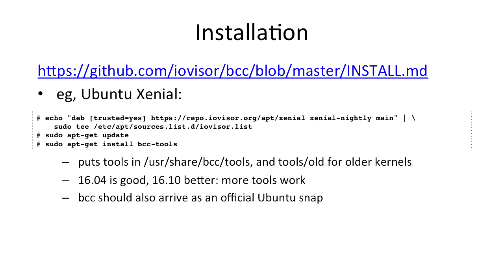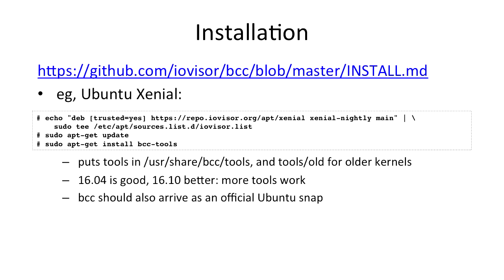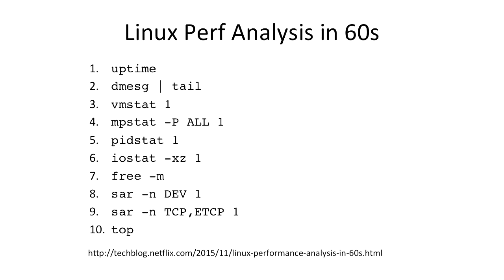So as some exposure to one way to use it, there's the BCC project for the command-line tools. And we've now got that on repo.iovisor.org, so you can end up doing an apt-get install. For Ubuntu Xenial, it helps if you're on the newest possible because more tools will work. Oh, and we did do an Ubuntu snap. I don't know if that's in the official repos yet, but we did get that to work.